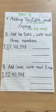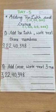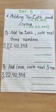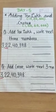Don't forget to paste your photograph as well as your parents' photograph. Now let's begin with the topic of our day 5. We are going to start a new topic which is adding lakh and crore. In lakh we have 6 zeros and in crore we have 7 zeros.